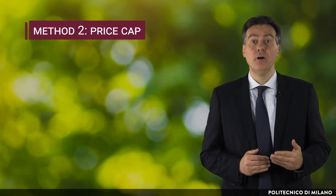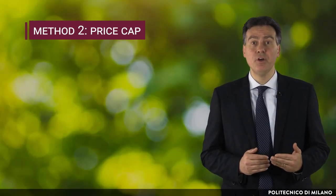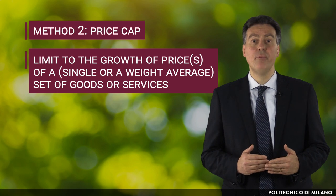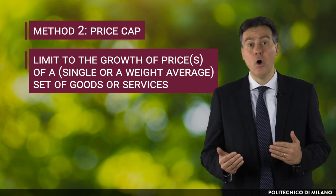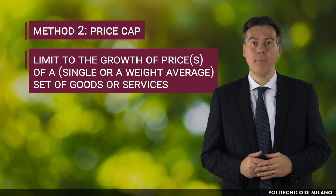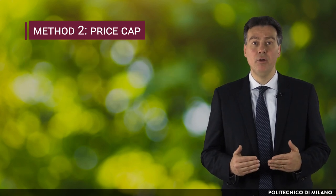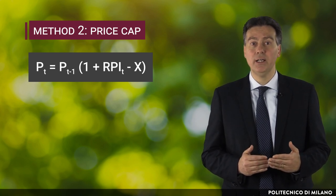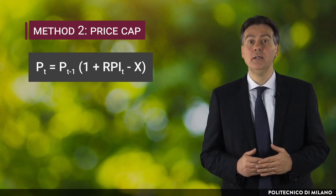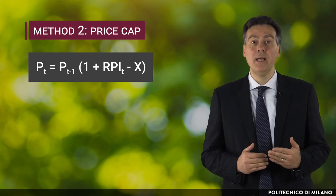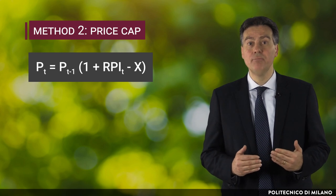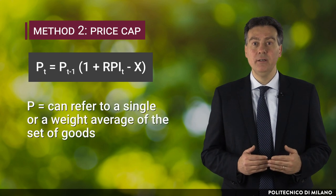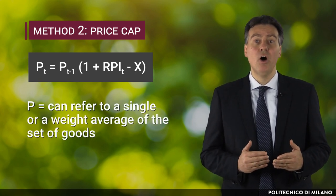A second and more recent method to control prices consists of imposing a price cap. With a price cap, the regulator defines a limit to the growth of prices of a single, or weight-average, set of goods or services. Practically, it is expressed with the following formula: the price at time t is equivalent to the price in the previous period t-1, multiplied by 1 plus the retail price index, minus the estimated growth in productivity — the so-called x-factor. The price p can refer to a single or weight-average of a set of goods.